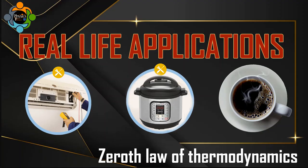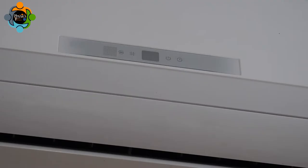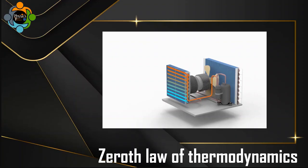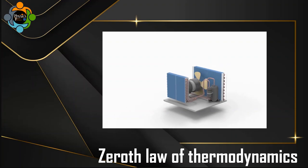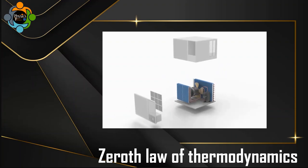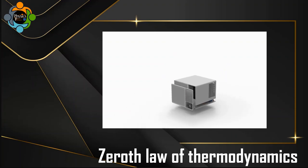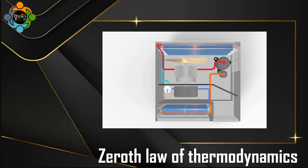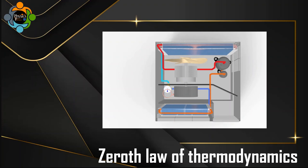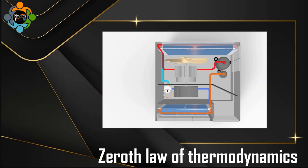One of the practical applications of the zeroth law is found in household items such as an air conditioner. The AC works by removing heat from a room and moving it outside. Inside the AC unit there is a thermometer that measures the unit's internal temperature. When it detects a higher temperature than the desired setting, the air conditioner turns on to bring the temperature down. The zeroth law helps the AC unit reach thermal equilibrium through temperature monitoring.